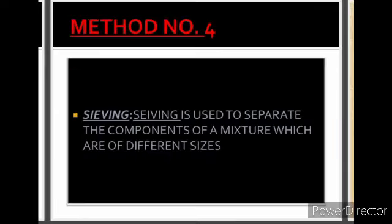Next is method number four: sieving. Sieving is used to separate the components of a mixture which are of different sizes. A device known as a sieve can be used to separate different-size materials from a given mixture. These are the four methods of separation, and there are certain other methods as well that we will see in our next part. Thank you very much.